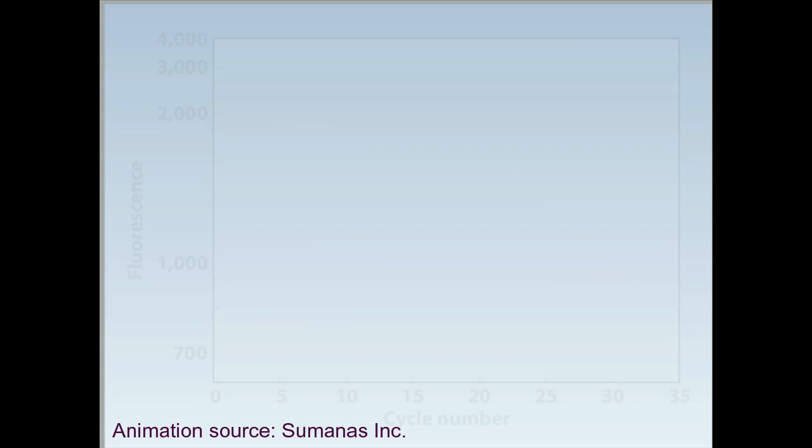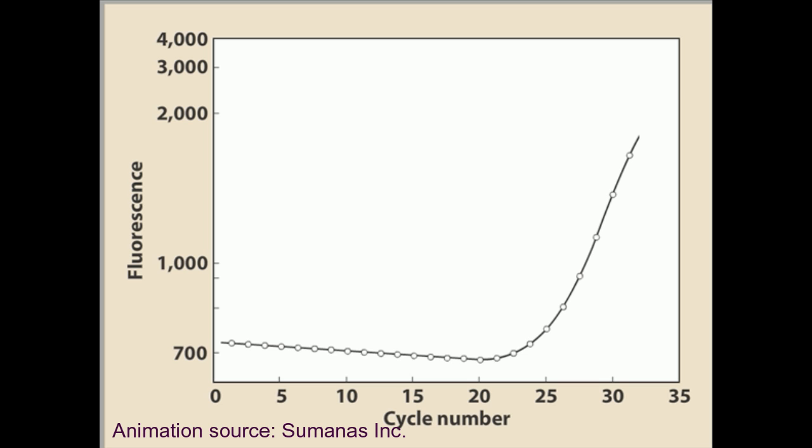After each cycle, the intensity of fluorescence is measured, and the data from all the cycles are used to construct an amplification plot, as you can see.